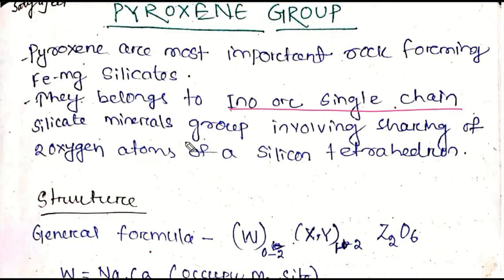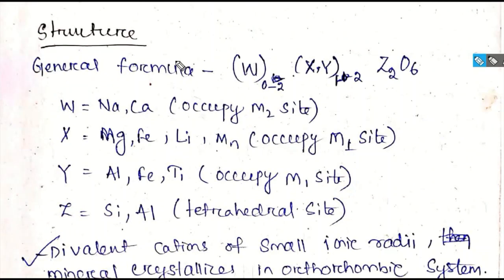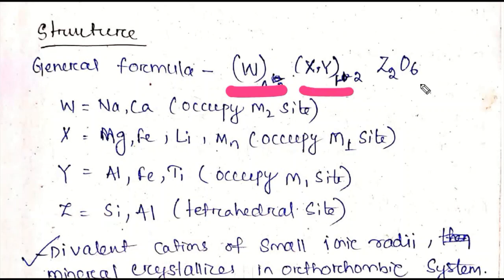What is the single chain structure? Two oxygen atoms of each SiO4 tetrahedra are shared with adjacent tetrahedra. The general formula is W(0-2) X,Y(1-2) Z2O6, or in expanded form M1, M2 notation with O6.